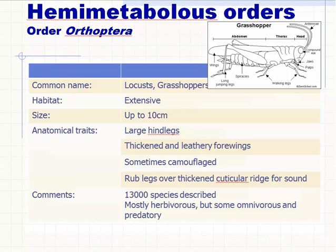Now we'll move into the winged insects: the hemimetabolous or Exopterygotic insects — those that undergo an incomplete life cycle where the nymphs resemble the adults — and the holometabolous Endopterygotes, that undergo complete metamorphosis where the young don't resemble the adults and wings form internally in the larvae. The hemimetabolous orders we'll look at include Odonata, Orthoptera, Phasmida, Dermaptera, Dictyoptera, Isoptera, Hemiptera, and Thysanoptera.